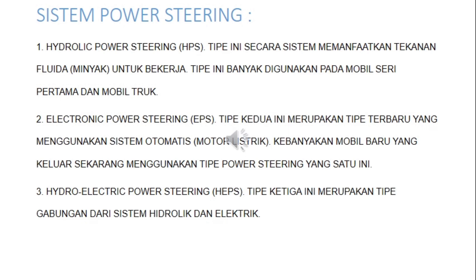Jenis yang kedua adalah electronic power steering atau EPS. Tipe ini adalah menggunakan sistem otomatis atau menggunakan motor listrik. Kemudian yang ketiga adalah hydroelectric power steering, biasanya disingkat dengan HEPS. Tipe yang ketiga ini adalah gabungan dari tipe yang pertama dan yang kedua, atau yang modelnya HPS dan EPS. Itu adalah tiga jenis dari sistem power steering.